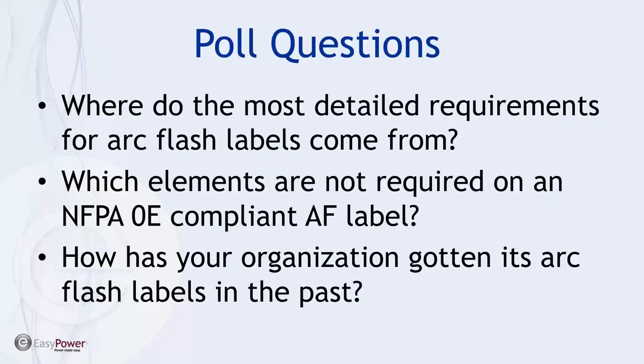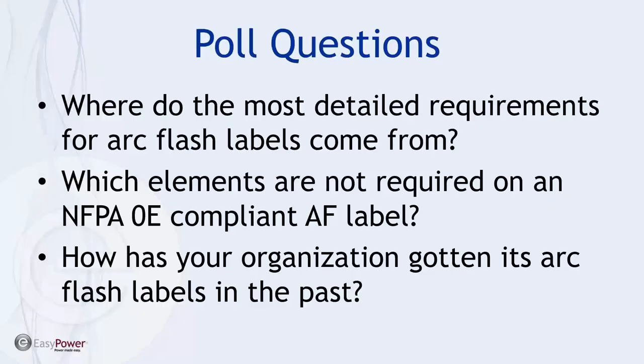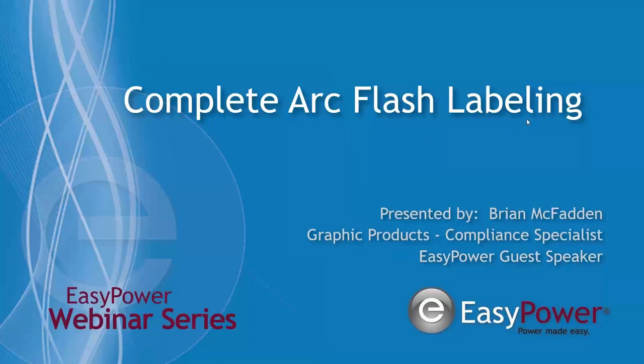Let's see the third question: how has your organization gotten its arc flash labels in the past? I'm very curious about this because I don't know that there's a clear line of demarcation. We've taken the liberty of recording Mr. McFadden's presentation today so he can sit on the sidelines and answer questions real time. Utilize the question box in the webinar control panel at any time. Thank you for participating — we can now start the video.